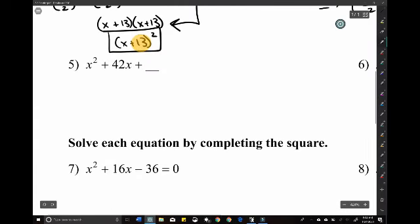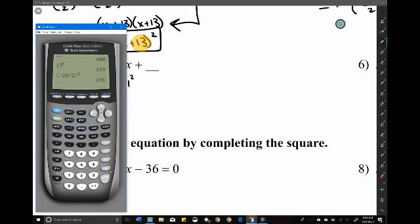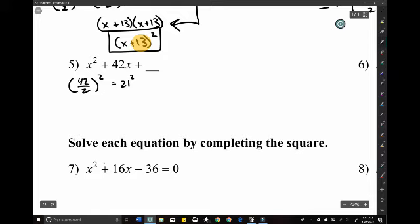5, same old idea. 42 over 2 squared. 21 squared. Oh my, we're getting some big numbers here. Again, you could do these in your calculator if you're scared. It's okay. 441. Wow.